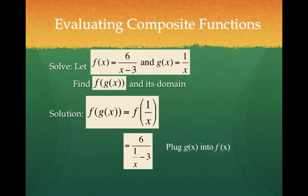So all I did was I took my f function 6 over x minus 3, and instead of writing an x, or typing an x in this case, I wrote my g function, which is 1 over x.